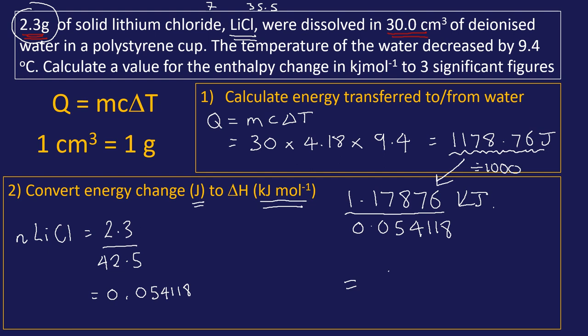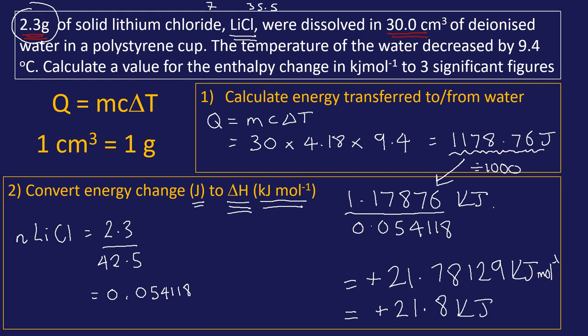Now divide kilojoules by moles to get kilojoules per mole: 1.17876 ÷ 0.05411 = 21.78 kJ/mol. Not quite finished — the sign of ΔH is essential. The temperature of the water decreased, which means enthalpy increased: this was an endothermic reaction, so we put a positive sign. Rounding to three significant figures, the answer is +21.8 kJ/mol. Remember: work out Q first, then convert to ΔH, and don't use the wrong mass.